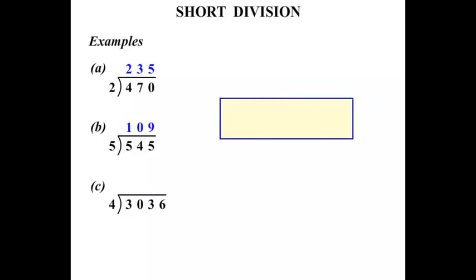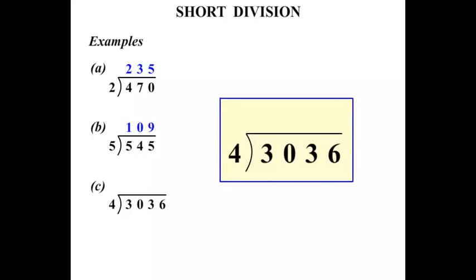The next one. 4 into 3036. So let's start. 4 into 3. Well, it won't go. And because we haven't started writing any numbers down, we don't need to write 0. We can go 4 into 30 though.